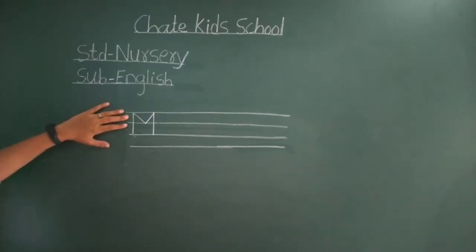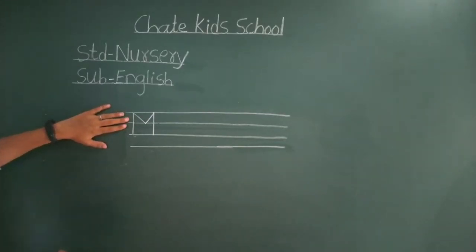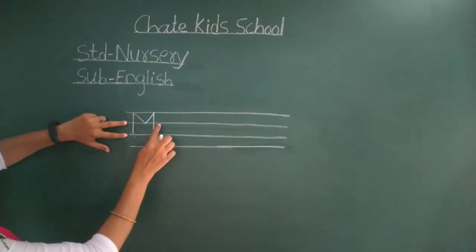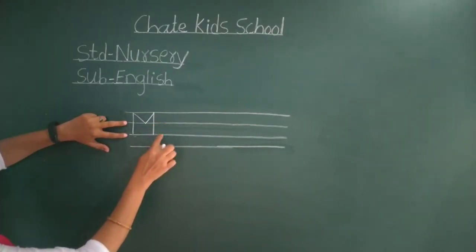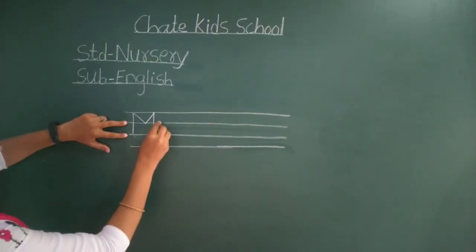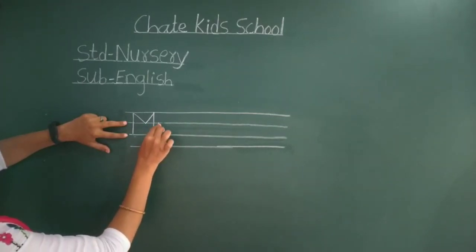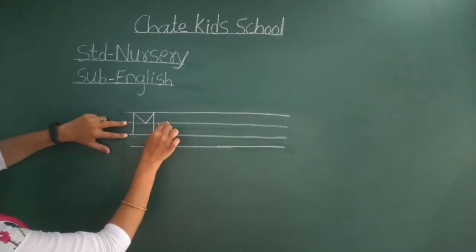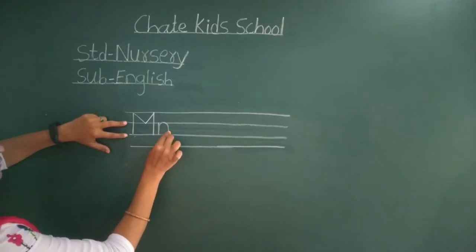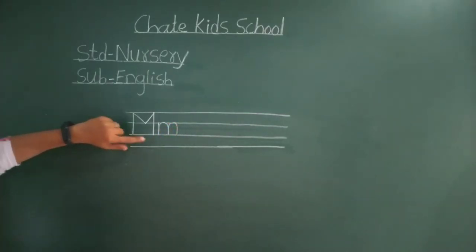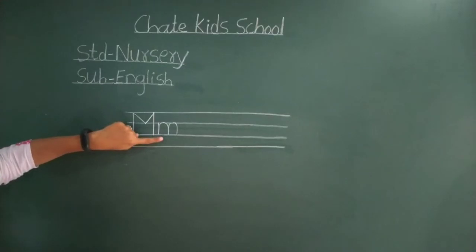That's a small m. How to write small m? Small m — we want to write in these two middle lines. Standing line, downside curve, another downside curve, another downside curve. It may curve. Small m.